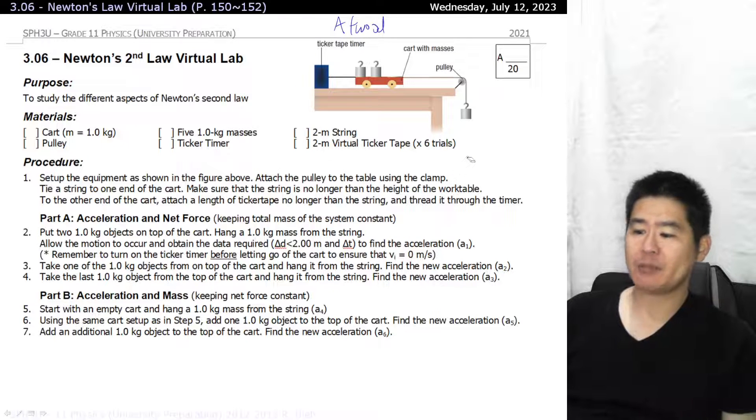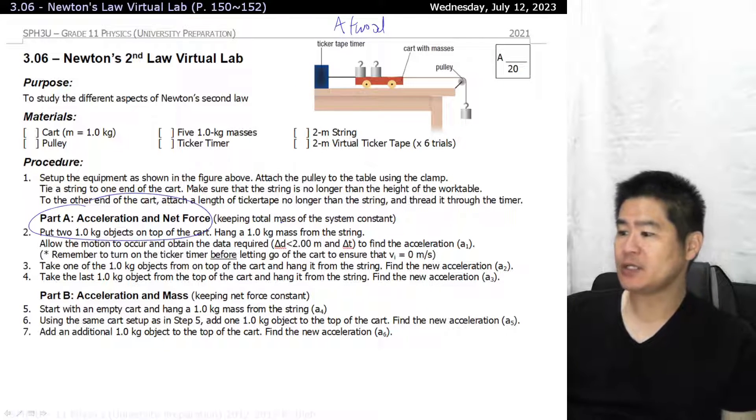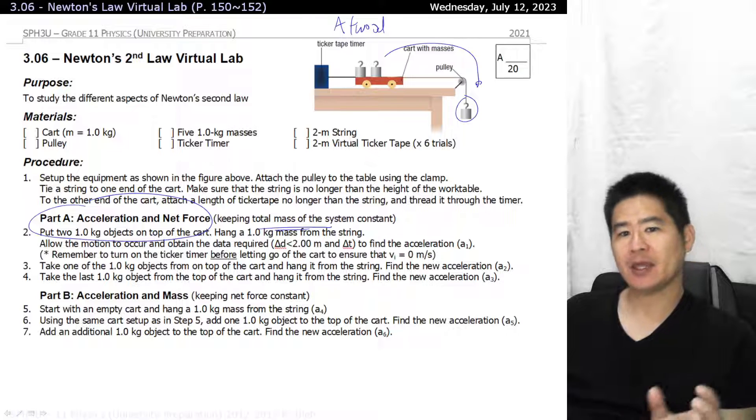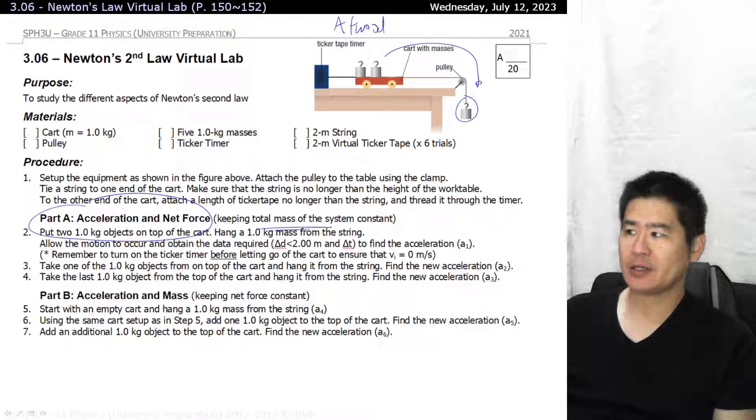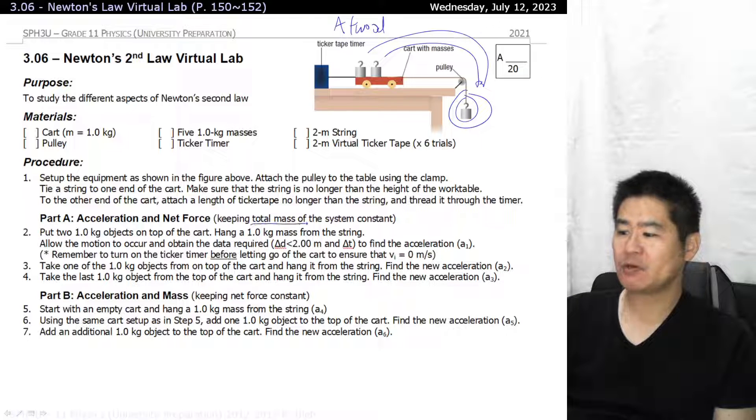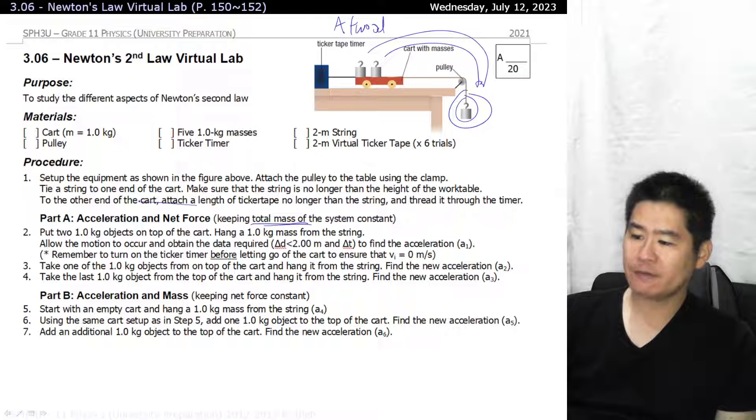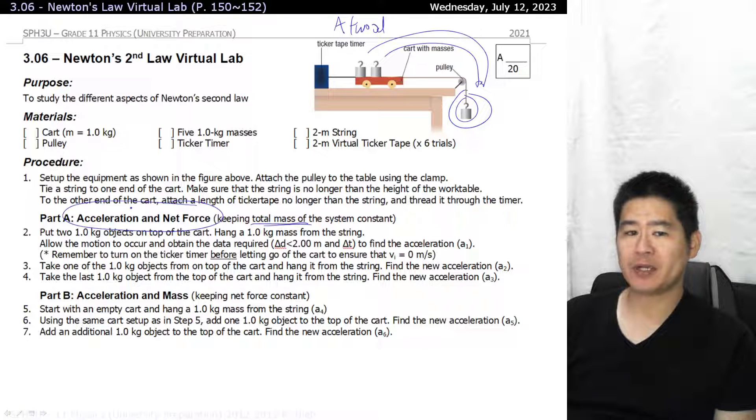There's actually two parts of this lab. The first thing you need to do is make sure that the mass of the system remains constant, and you're going to do that by simply relocating the masses. You're going to observe the rate of acceleration in the setup that you see initially, then add more mass by redistributing the mass of the system and measuring the rate of acceleration again. Then you're going to bring another mass over and make it heavier and heavier.